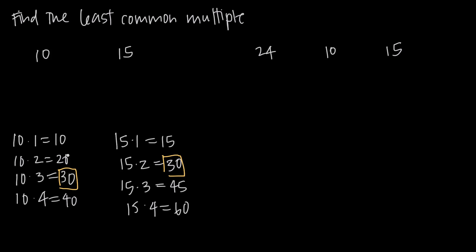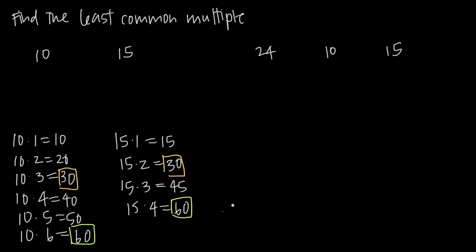10 goes into 10 and 20 evenly, but 15 doesn't. 15 goes into 15 evenly, but 10 doesn't go into 15 evenly. So 30 is the least common multiple. If I kept going with 10, I could say 10 times 5 is 50 and 10 times 6 is 60. 60 is also a multiple of both 10 and 15, but it's not the least common multiple because 30 is smaller than 60. So 30 is the least common multiple of 10 and 15.